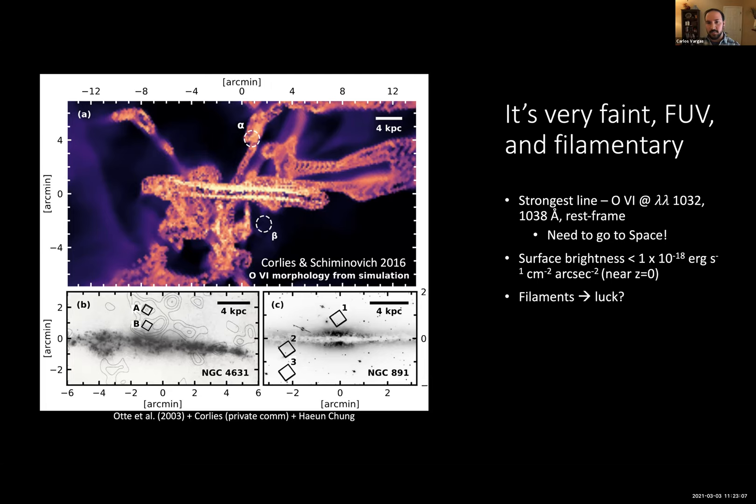If the CGM's O VI emission is more filamentary than we expect, they could have been looking at regions like beta where they didn't detect, and regions like alpha shown up here where they did. It's possible. Again, even more need to map in emission.